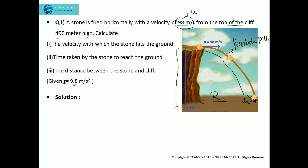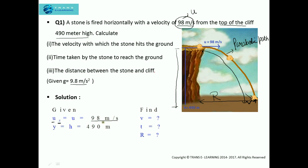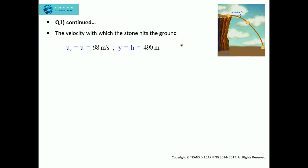The acceleration due to gravity is given as 9.8 meters per second squared. To solve this question, the first step is to analyze what is given and what needs to be found. Given: the initial velocity in the horizontal direction u_x equals 98 meters per second; the height h equals 490 meters. We need to find: the final velocity, the time of flight, and the horizontal range.